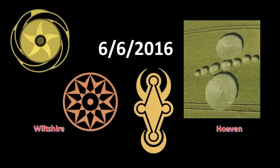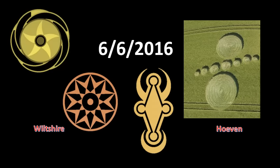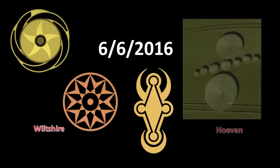There are two crop circles which appeared in Wiltshire, England on June 6th, 2016, and additional artwork appeared in the May 28th crop circle. Let's call that the June 6th add-on. And a simple dotted design appeared at Hoven, Netherlands, also on that day.